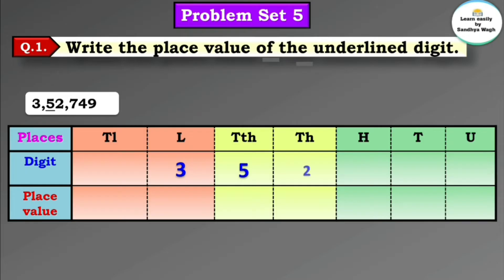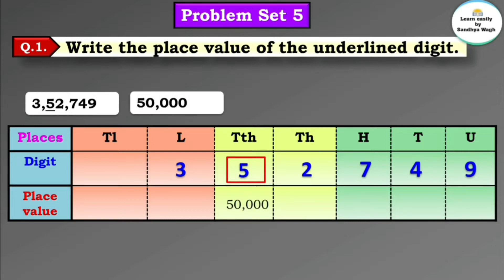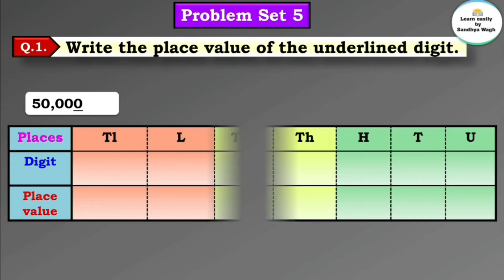Next number: 3,52,749 and the underlined digit is 5. Let's arrange this number according to their places. This 5 is in the 10 thousands place, so the place value of 5 is 50,000. Our answer is: the place value of 5 in number 3,52,749 is 50,000.